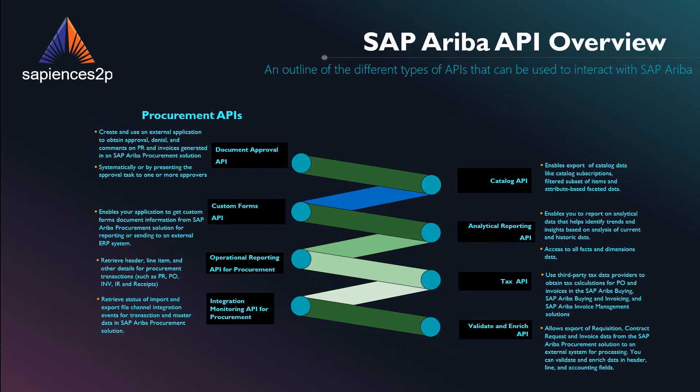Ariba Procurement APIs help pass data to and from the SAP Ariba Procurement solution, including letting third-party applications access data on invoices and other transactions. They include specialized links for tax information, validation data, monitoring integration, and more.